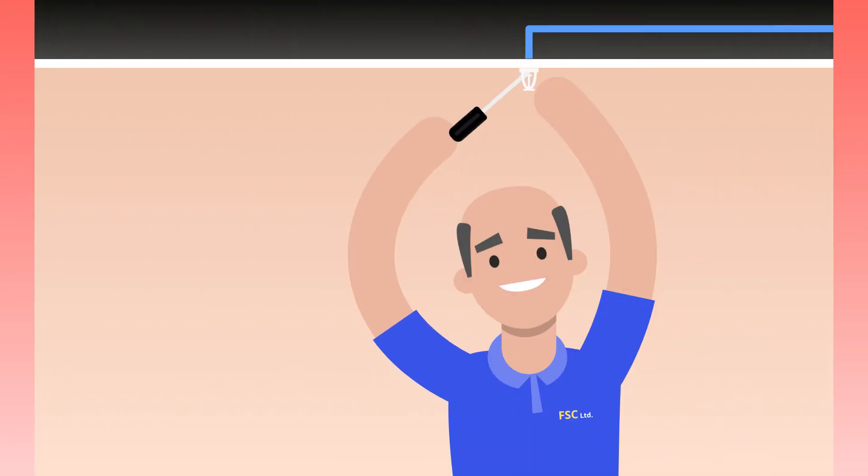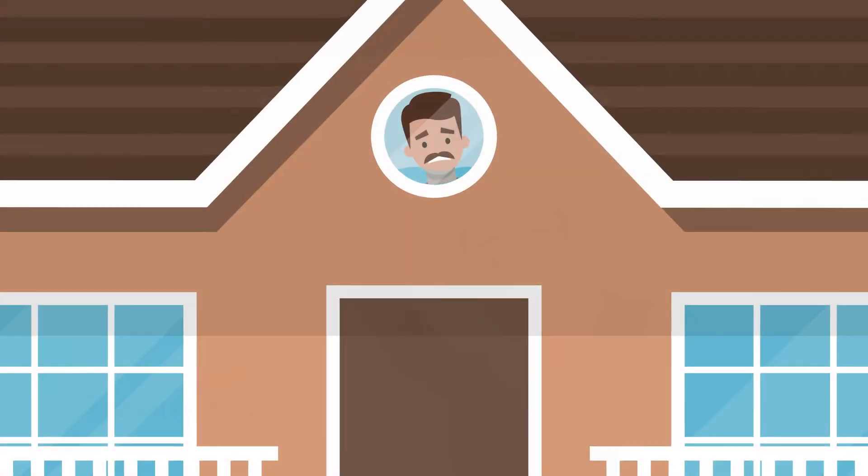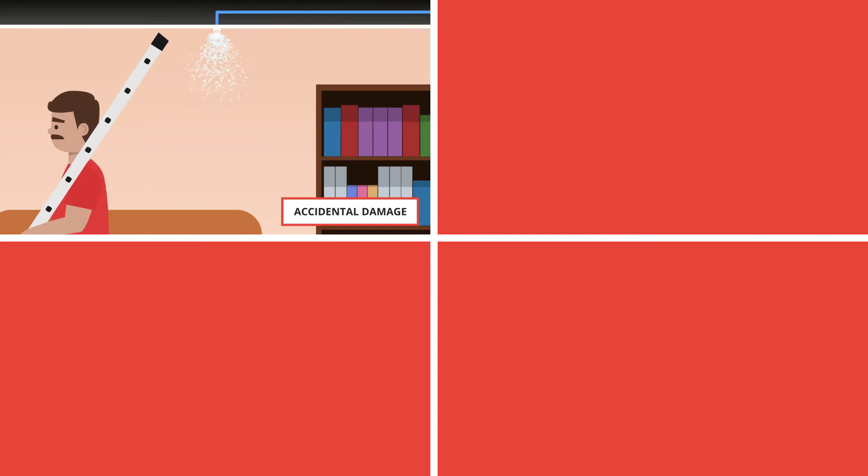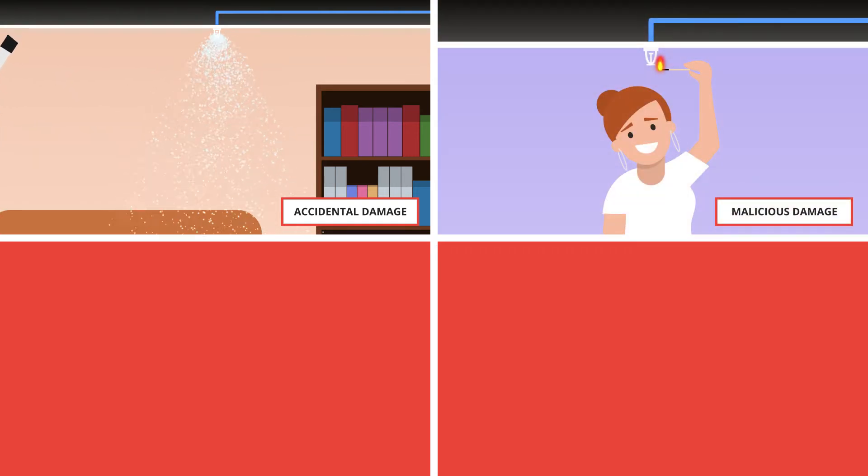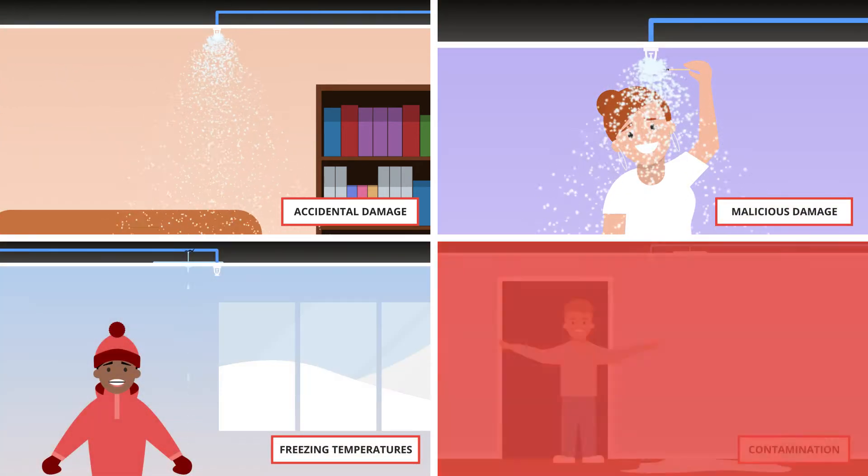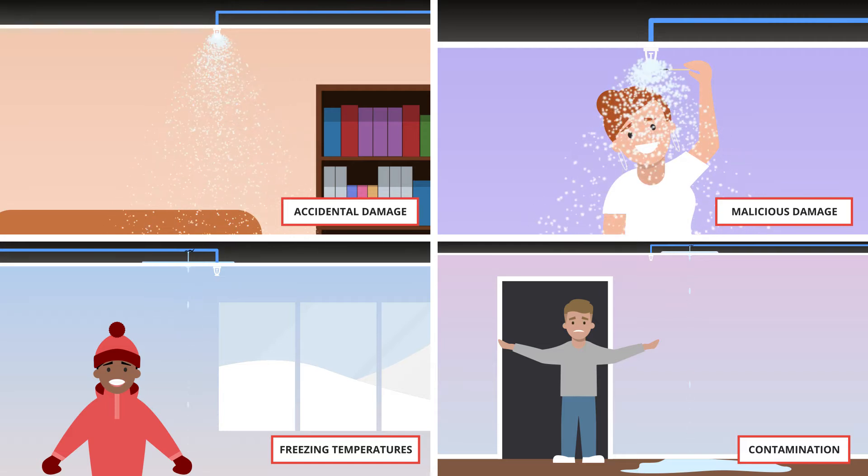Even when a sprinkler system has been installed correctly, several things can cause system leaks. For example, accidental damage, malicious damage, freezing temperatures, and contamination from other building materials.